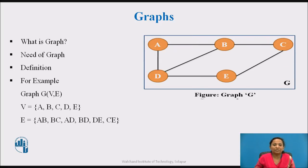For example, as shown in this figure, a graph G with vertices A, B, C, D, E and edges AB, BC, AD, BD, DE, CE. So here there are 5 nodes and 6 edges present in graph G.